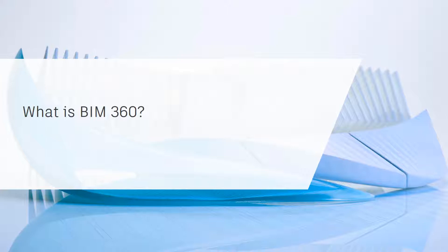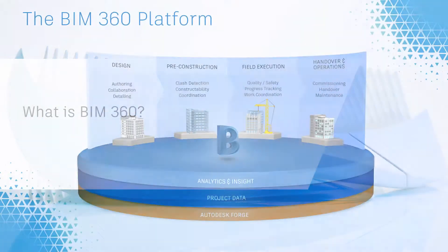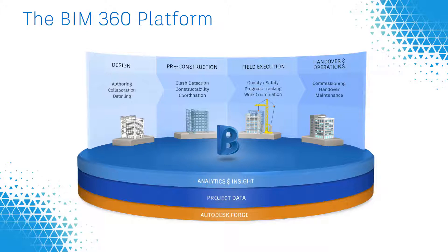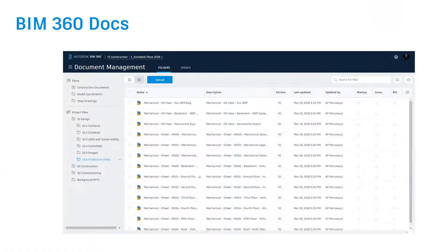Let's start with: what is BIM 360? BIM 360 is a cloud-based data platform that allows data for a BIM project to transition from design, to planning, to construction, and even operations. The component we'll be discussing today is BIM 360 document management, often referred to as BIM 360 Docs. This is where you'll publish your InfraWorks models when you want to collaborate with others.